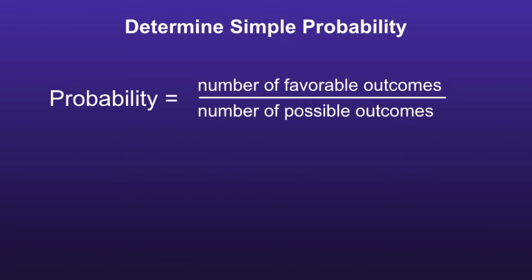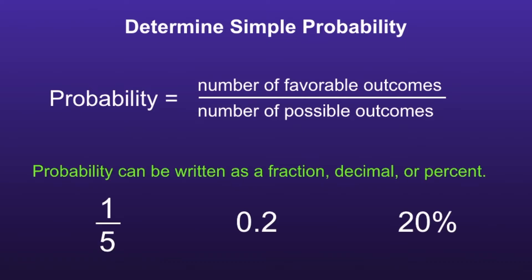Determine Simple Probability. In order to find the probability, we can use a fraction. In this fraction, the numerator will be the number of favorable outcomes, and the denominator will be the number of possible outcomes. It is important to note that probability can be written as a fraction, decimal, or percent. In this video, we're going to represent probability with just fractions. I will also include links in the description to videos that explain how to convert between fractions, decimals, and percents if you would like to review those skills.